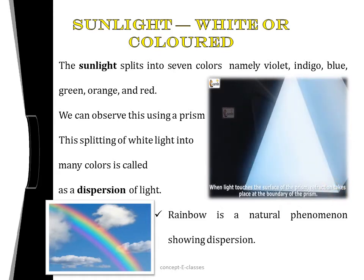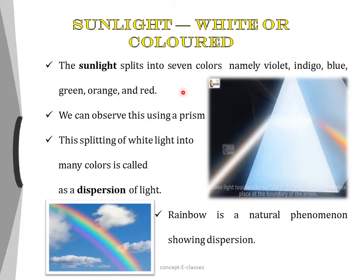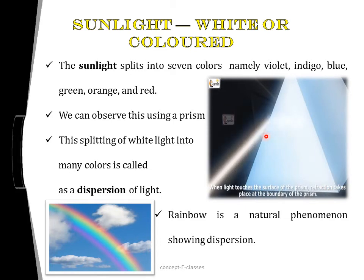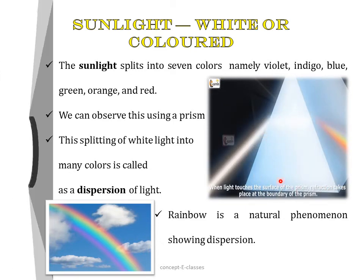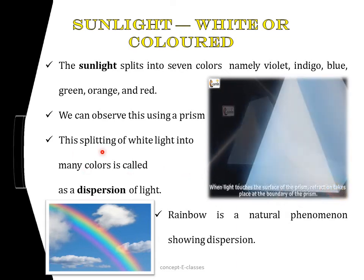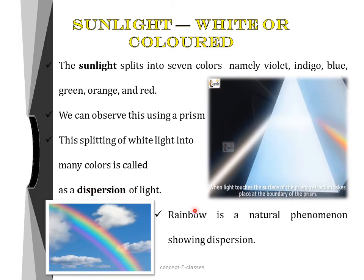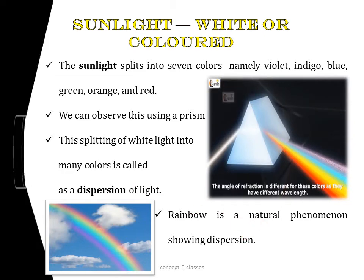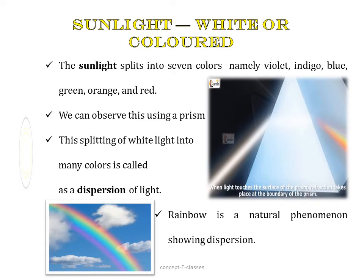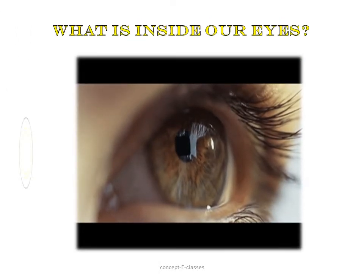Sunlight splits into seven colours: violet, indigo, blue, green, yellow, orange, and red — known as VIBGYOR. We can observe this using a prism: when a narrow beam of sunlight falls on one side of the prism, the reflected light shows several colours. This splitting of white light into many colours is called the dispersion of light. A rainbow is a natural phenomenon that shows this dispersion. Mixing all these colours together gives back white light, which is why sunlight is called white light.